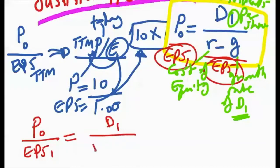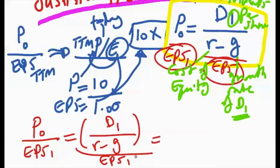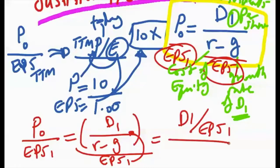You have this new formula: basically it's P₀ divided by EPS₁, which is the P/E ratio for next year's earnings, equals D₁ divided by r minus g. Then you divide all this by EPS₁. Basically what we're doing is this EPS goes from the denominator all the way to the numerator and you end up with D₁ divided by EPS₁, then you divide by r minus g. We're actually creating another ratio.